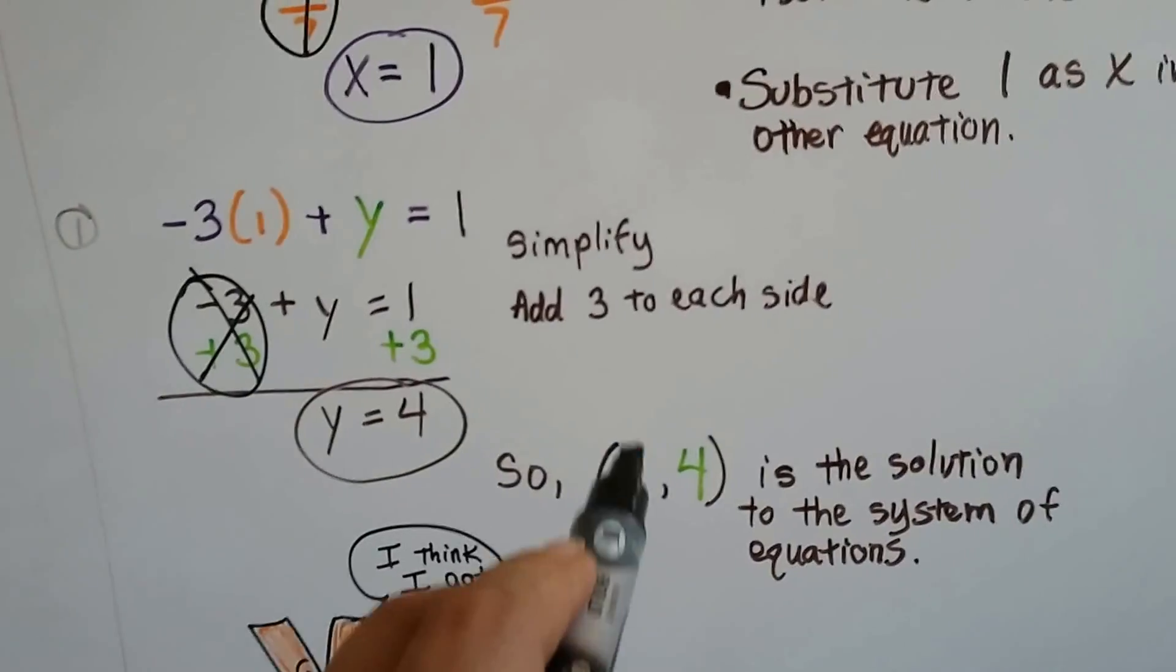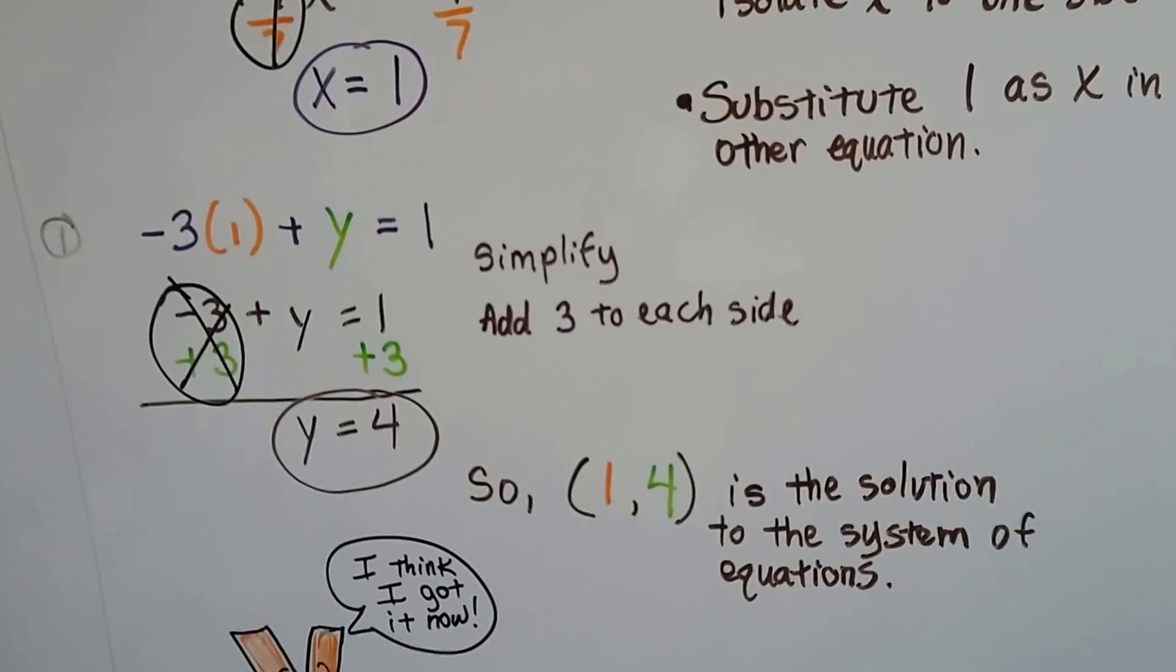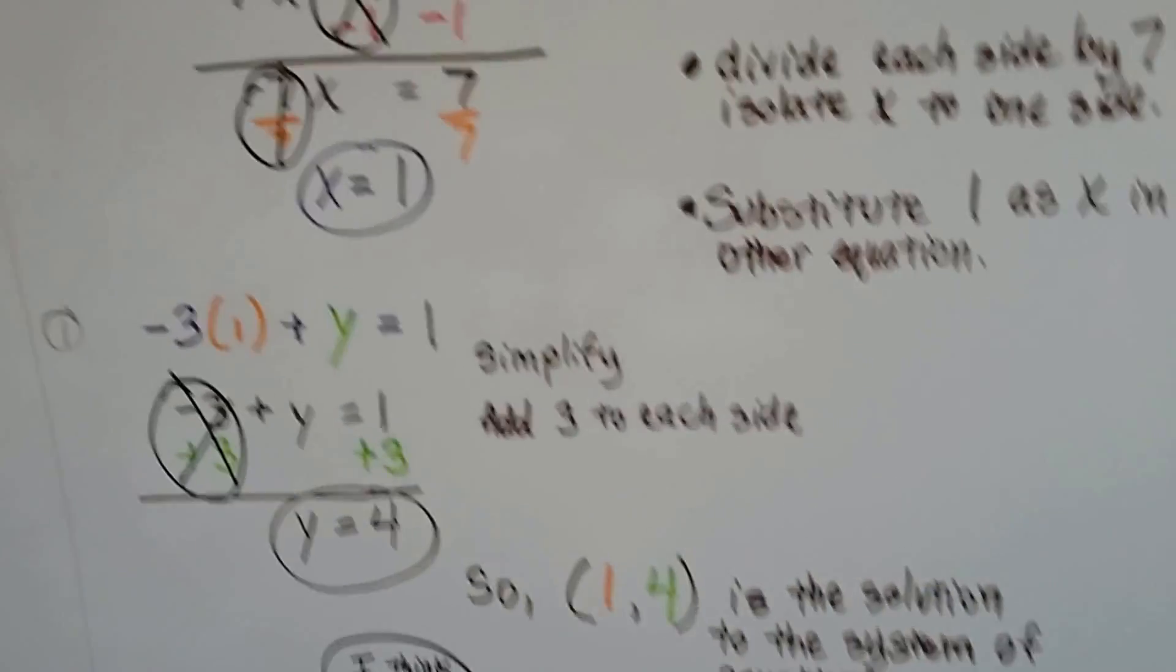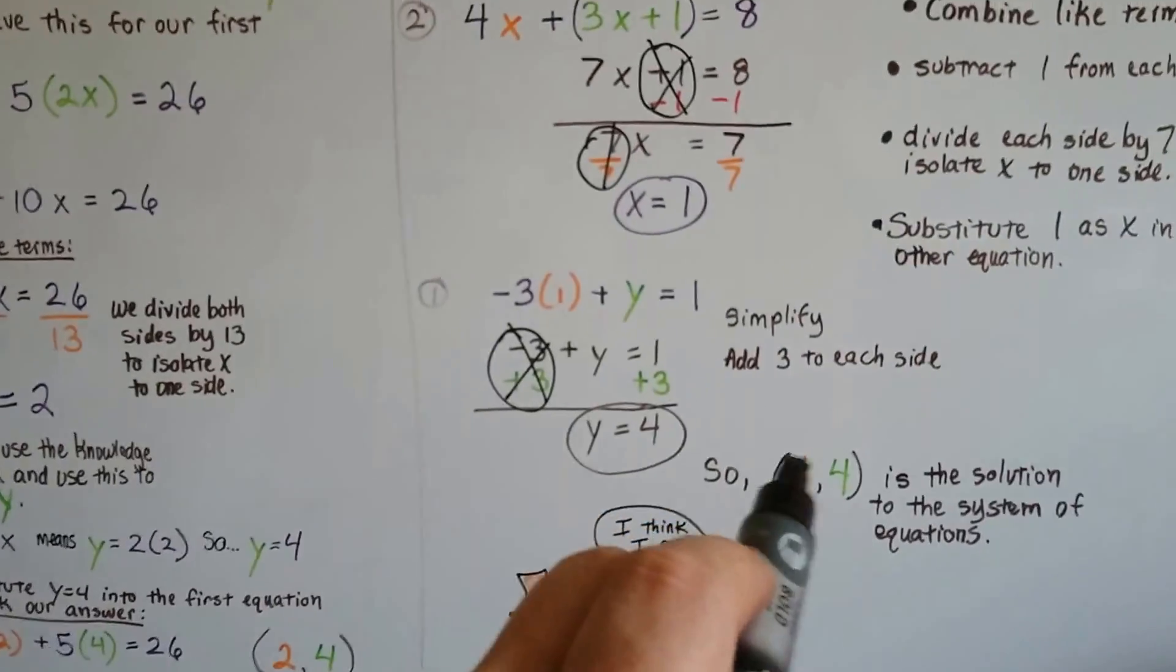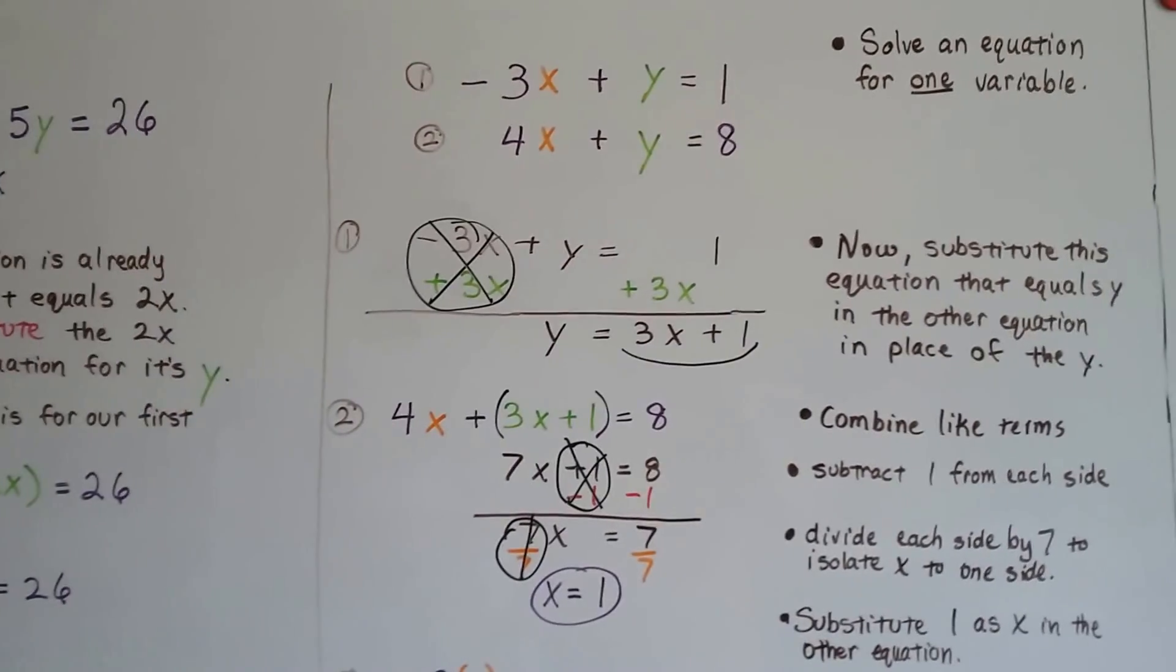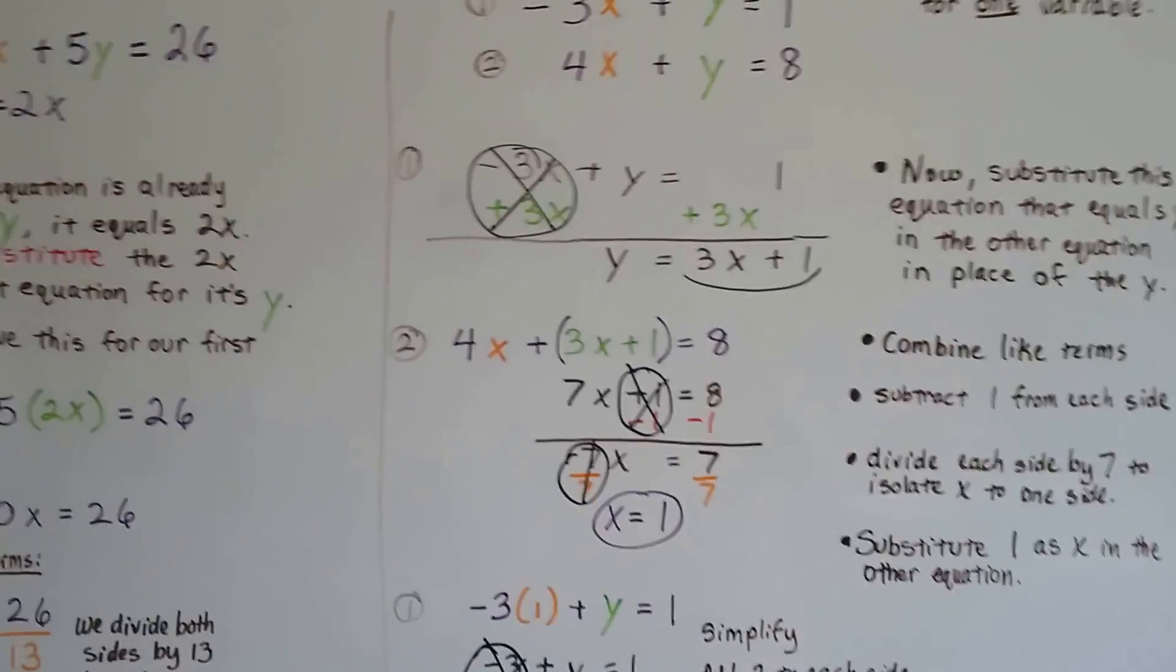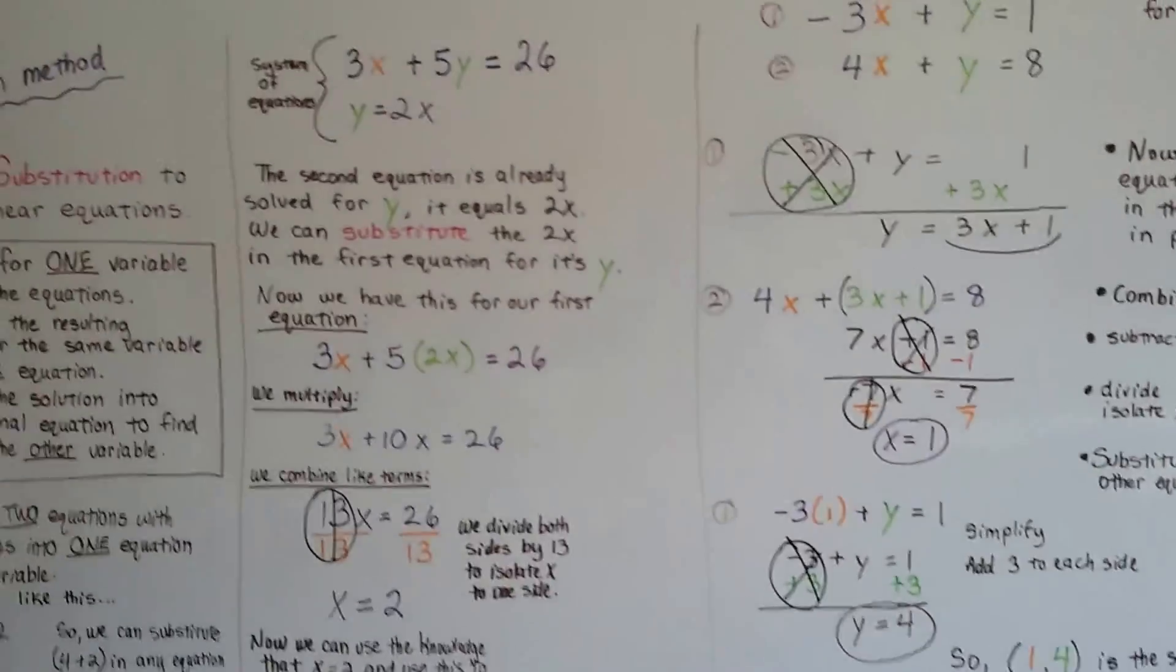Our ordered pair is 1 and 4. x is 1, y is 4, and that's the solution to the system of equations. And if we wanted to, we could do what we did over here and plug the 1 and the 4 into these to check and see if the math comes out right to make sure we did it right. I'm running out of board space. We know they're right. But normally, it is good to check.